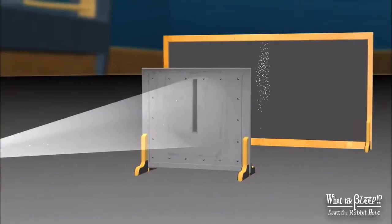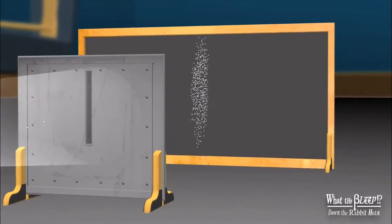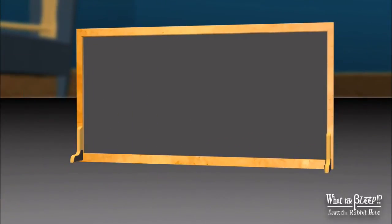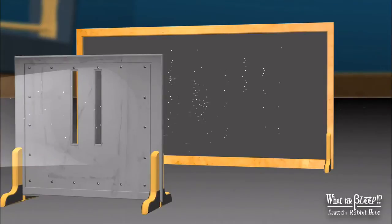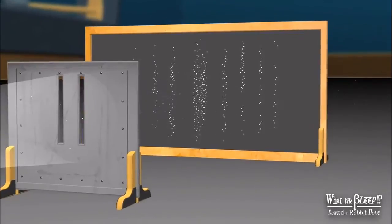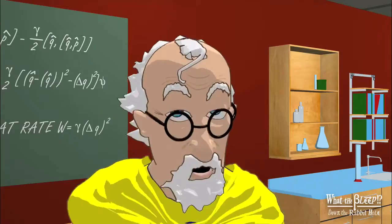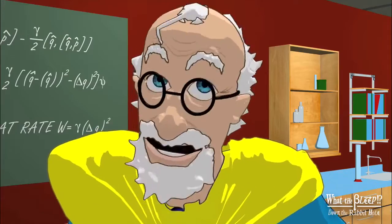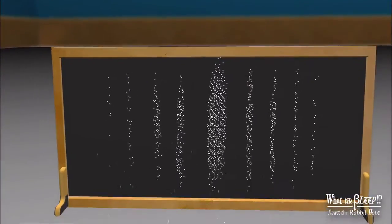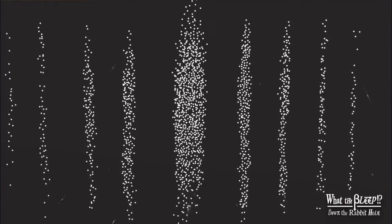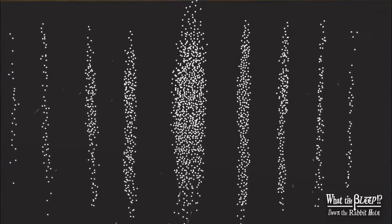So if we shoot these tiny bits through two slits, we should get, like the marbles, two bands. What? An interference pattern! We fired electrons, tiny bits of matter, through, but we get a pattern like waves, not like little marbles. How could pieces of matter create an interference pattern like a wave?